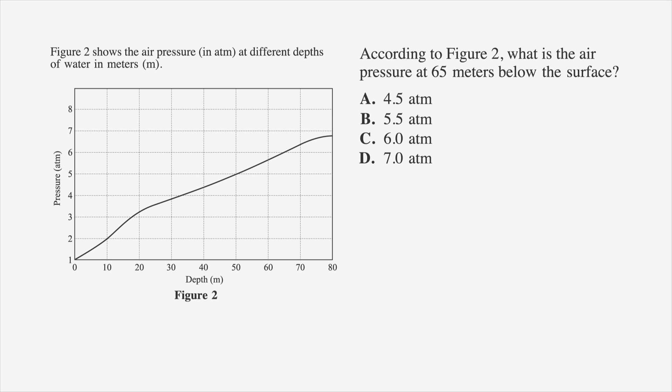According to Figure 2, what is the air pressure at 65 meters below the surface? The answer choices are A, 4.5 atmospheres, B, 5.5 atmospheres, C, 6.0 atmospheres, and D, 7.0 atmospheres.